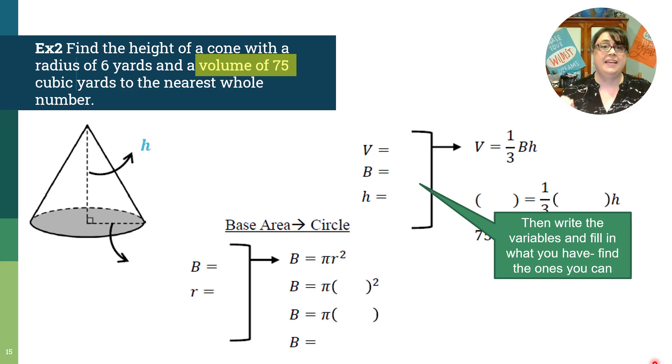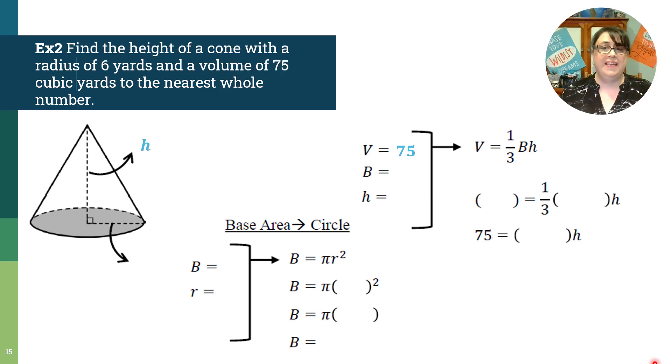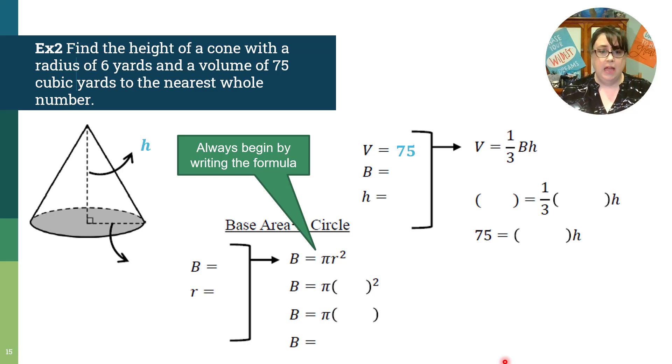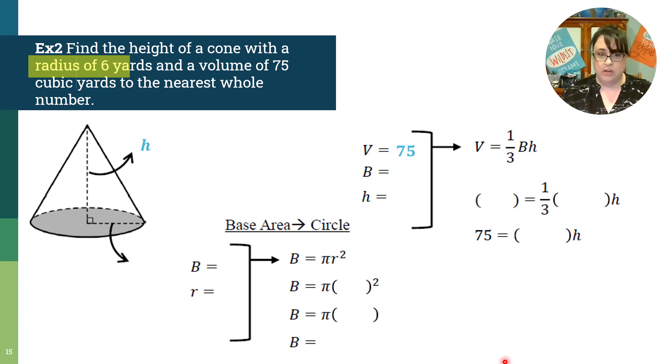So it does say it has the volume. I'm actually going to put 75 for the volume and it says find the height. So I know that this height is going to be left blank. Which means I need to go find the base area. So I'm going to write that formula down and I'm going to go find pieces as I can. I found that the radius is six yards. So if that's six yards, that means radius is six. And I'm going to substitute it in. So six squared is 36, but we don't write pi 36. We write 36 pi. So I'm going to go ahead and bring that back to my main problem.